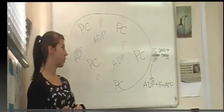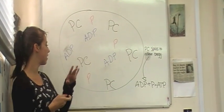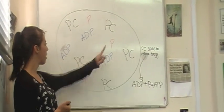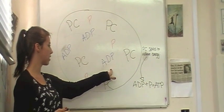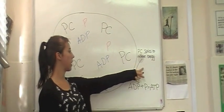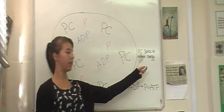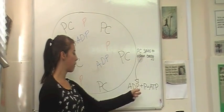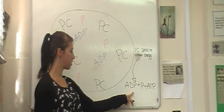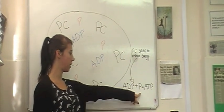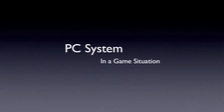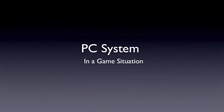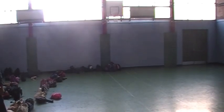This is the phosphocreatine system. In the cell you have the phosphocreatine and the adenine diphosphate. The phosphocreatine splits to release energy, which then provides the energy to replenish the ADP with the spare phosphate to create ATP. This is an example of the PC system in action.